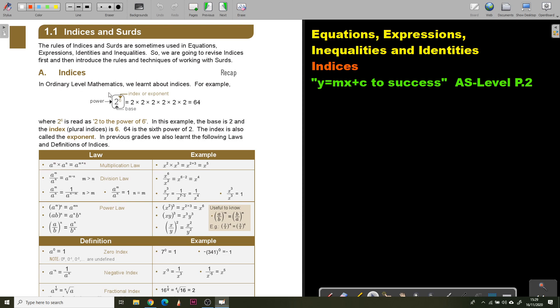In ordinary level mathematics we learned about indices. For example, the index or the exponent, this is the power, this is the base. What does it mean? It means you must multiply 2 six times and you will get 64. Where 2 to the power of 6 is read as 2 to the power of 6, in this example the base is 2 and the index, plural indices, is 6. 64 is the sixth power of 2. The index is also called the exponent.